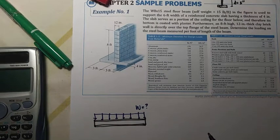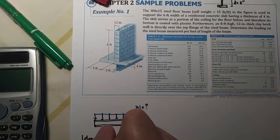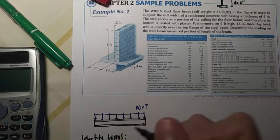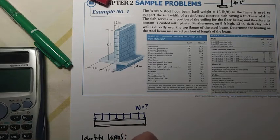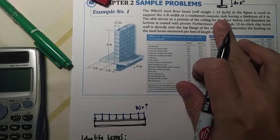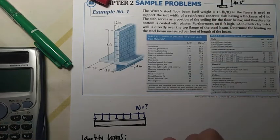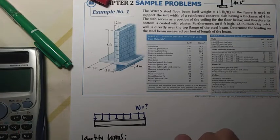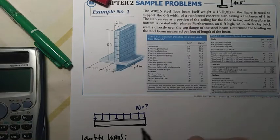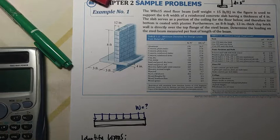First, identify loads. First it will have the self-weight, the beam self-weight, and that is actually given as 15 pounds per foot. So 15 pounds per foot. Now next is the concrete reinforced concrete slab, RC slab.